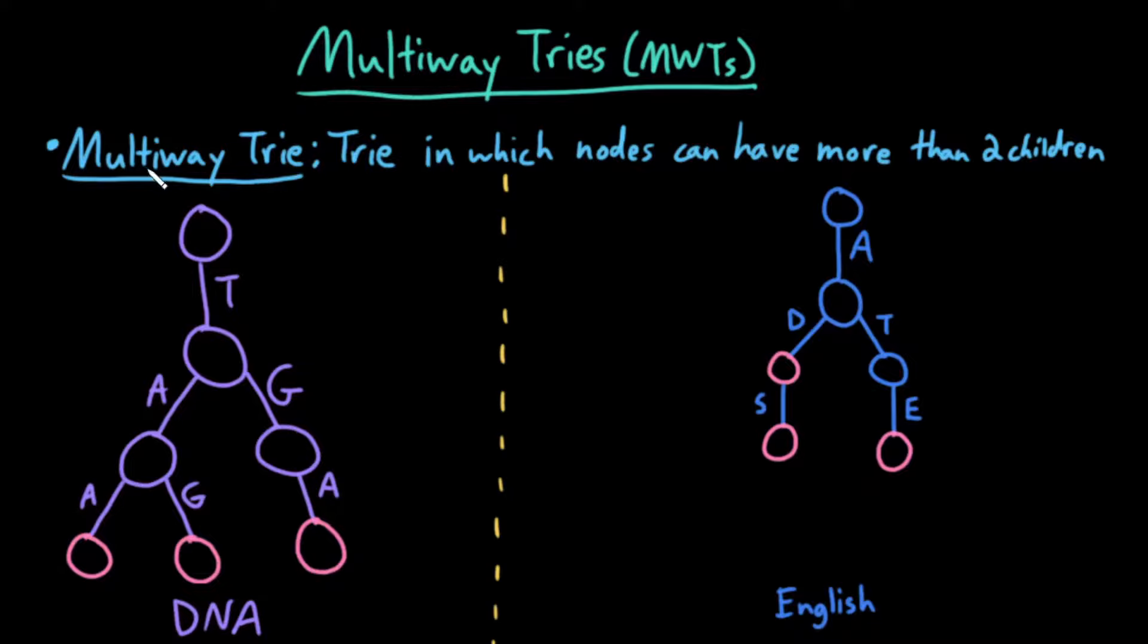A multi-way trie is a trie in which nodes can have more than two children. Or in other words, a multi-way trie is a trie over some larger alphabet than size 2.